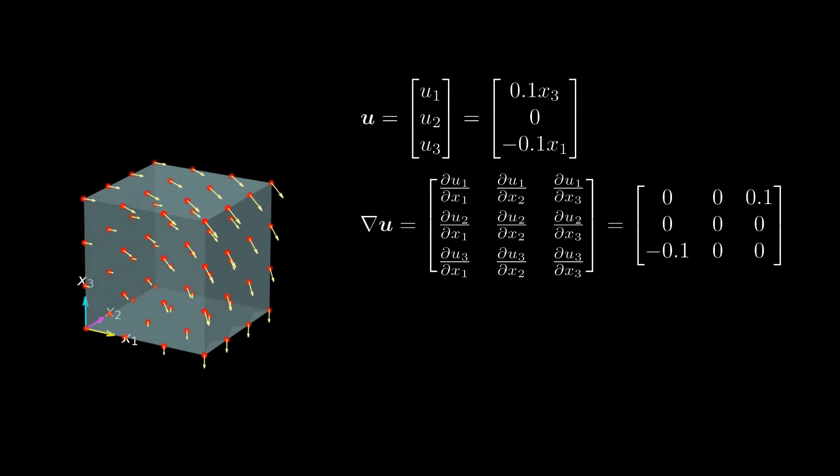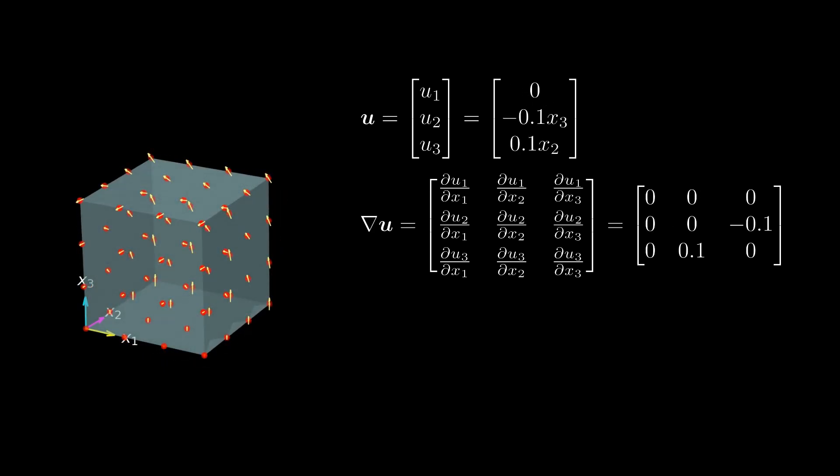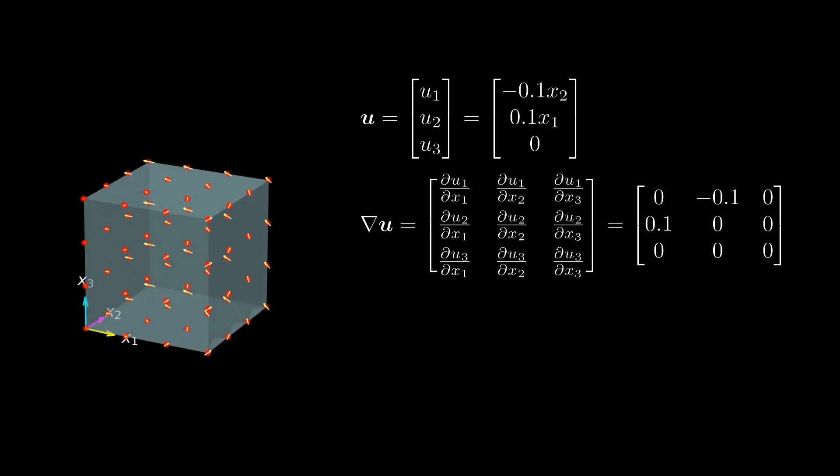Let's go back to the displacement gradient. We have seen that the rotation of matter resulted in a non-zero displacement gradient. Now take a look at the following. No matter how the matter is rotated, the displacement gradient always shows a certain pattern. It is always skew-symmetric.